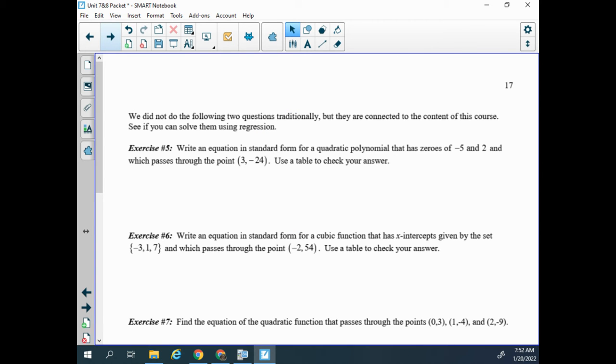The next few problems are something that we didn't do exactly traditionally. We did kind of simpler problems of them, but we just want to see how we could use regression for these. So this says, write an equation in standard form for a quadratic polynomial that has zeros of negative 5 and 2. So we did do that. We wrote quadratics where we did the roots. We changed the signs to make the factors. But then we always gave the lead coefficient. In this problem, it says we also know that it passes through (3, -24).